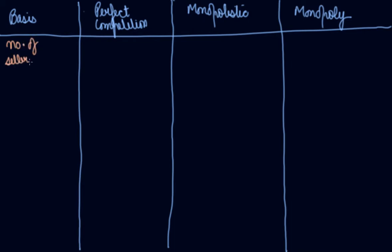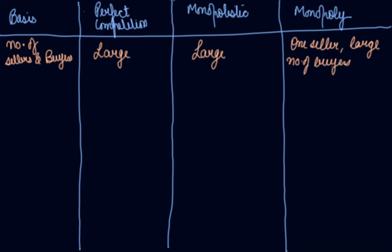In perfect competition there are large numbers of sellers and buyers. In monopolistic competition also there are large numbers of buyers and sellers. In monopoly there is one seller and large number of buyers. This is the first difference we have.